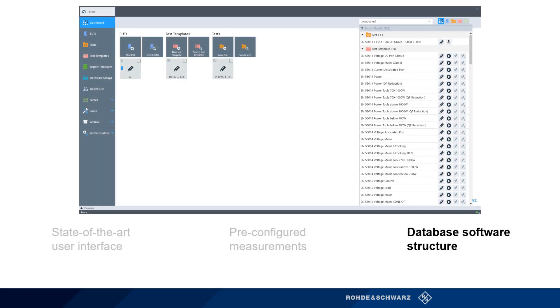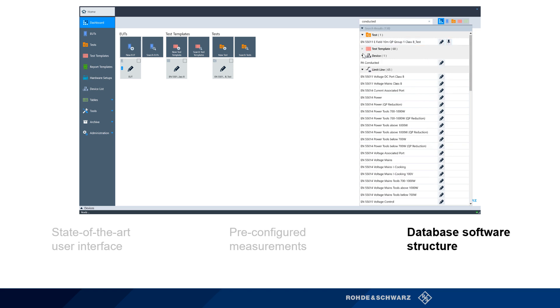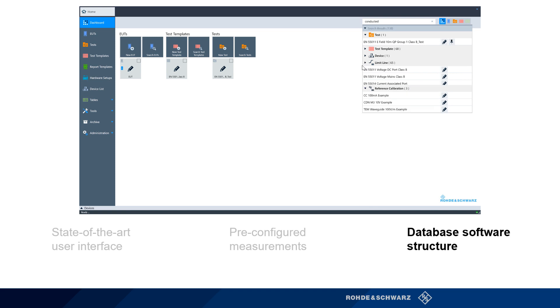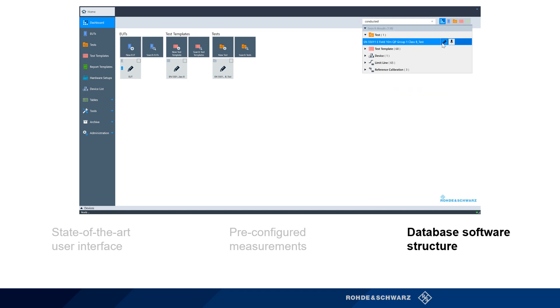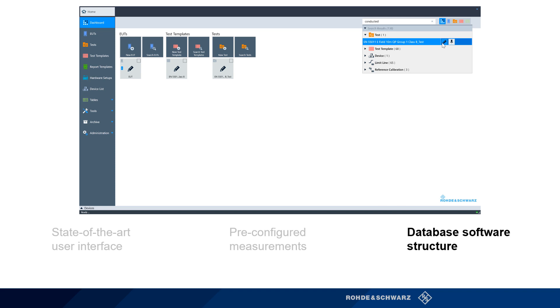ELECTRA's software structure is built off of a database, as opposed to EMC32, where a folder structure was used. This enables users to create and search for test templates, results, and more very quickly and efficiently.